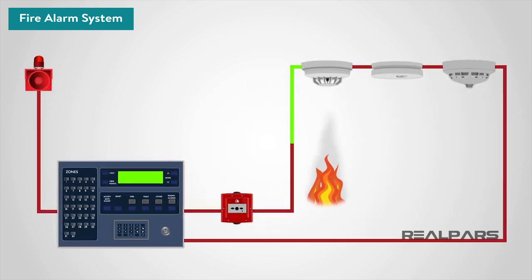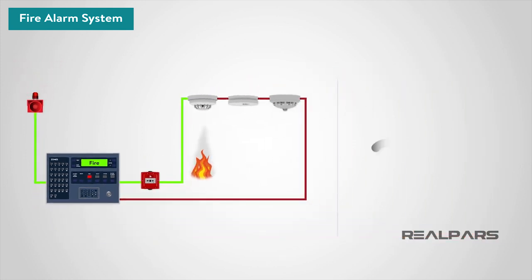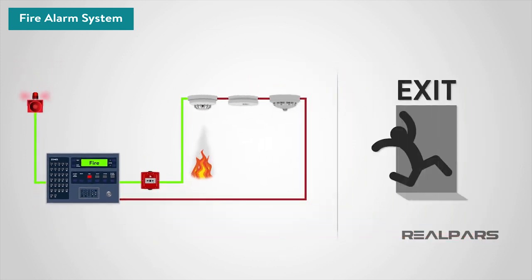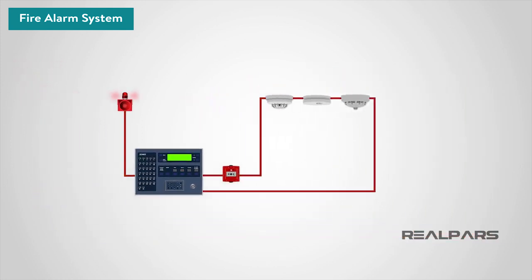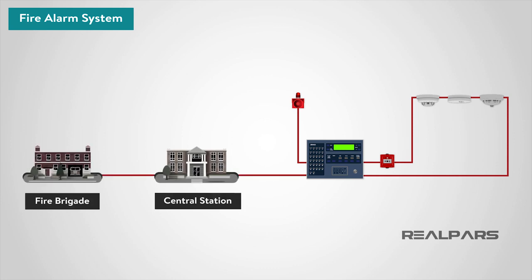Whatever the method of detection is, if the alarm is triggered, sounders will operate to warn people in the building that there may be a fire and to evacuate. The fire alarm system may also incorporate a remote signal system, which could then alert the fire brigade via a central station. In this video, we will have a look at the structure and types of the fire alarm systems.